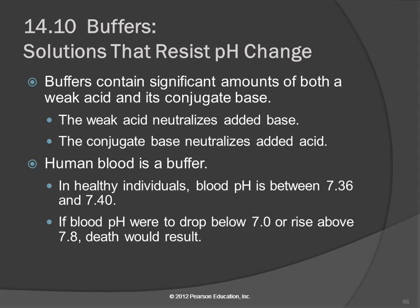Interestingly, the way to treat ethylene glycol poisoning is to give ethyl alcohol — that's alcohol, like pour vodka down the cat's throat. Because your body metabolizes the ethyl alcohol preferentially to the ethylene glycol. So you keep your body busy with the ethyl alcohol, and then the ethylene glycol just kind of slips out. Not something to mess around with.